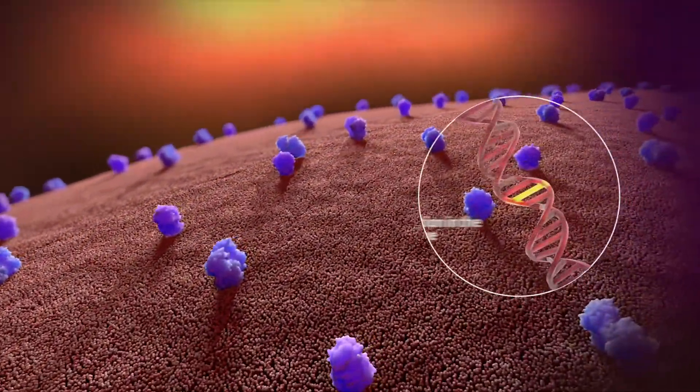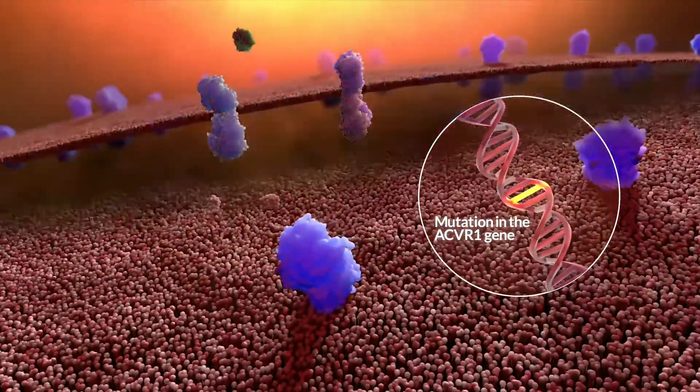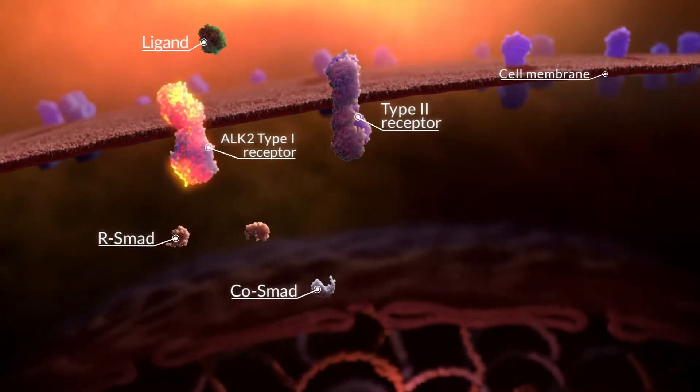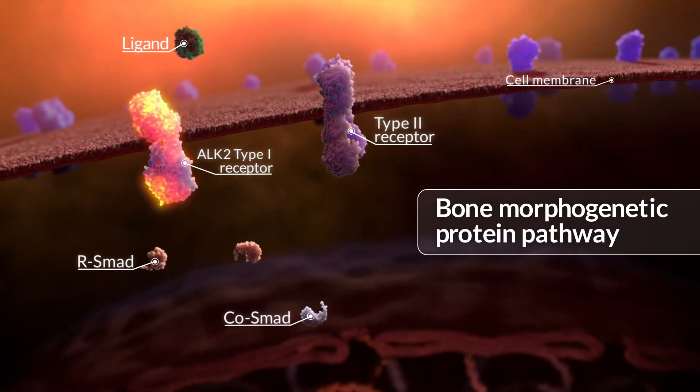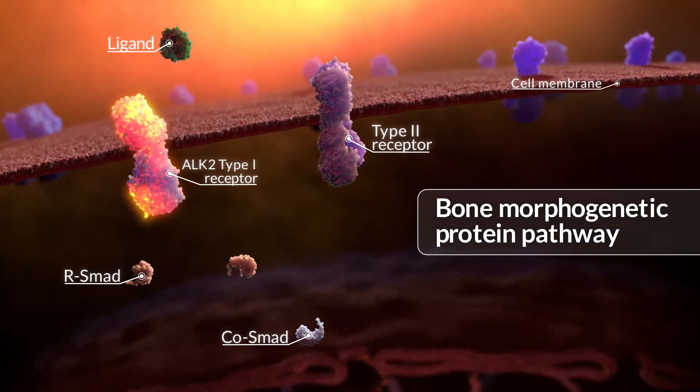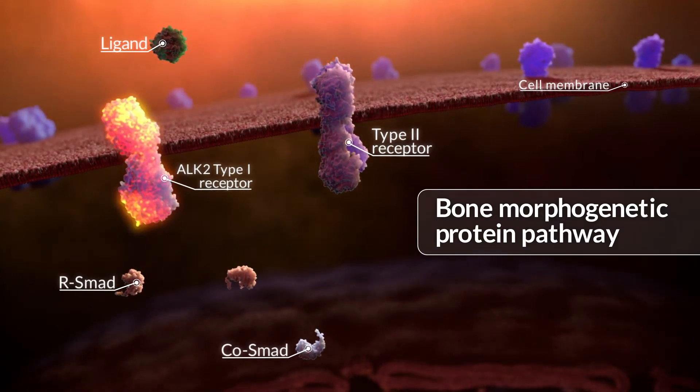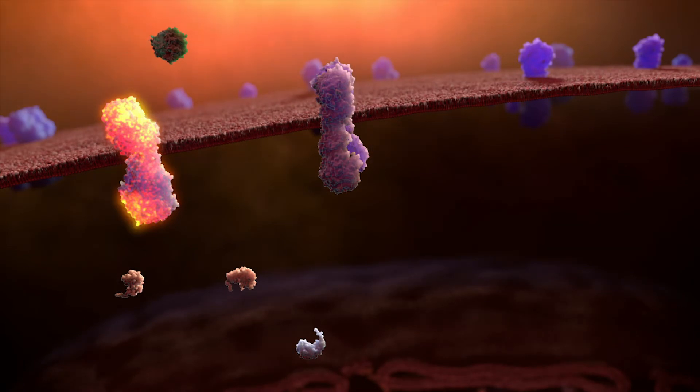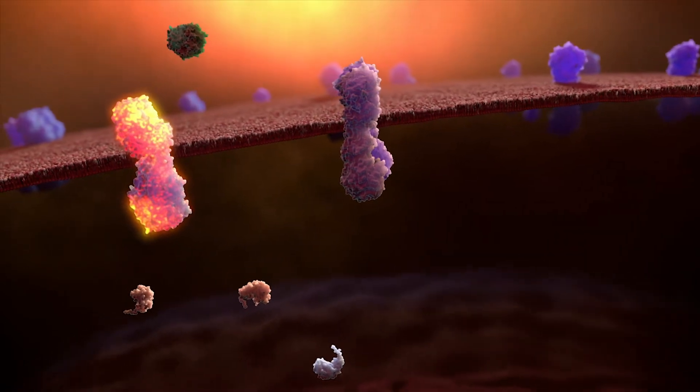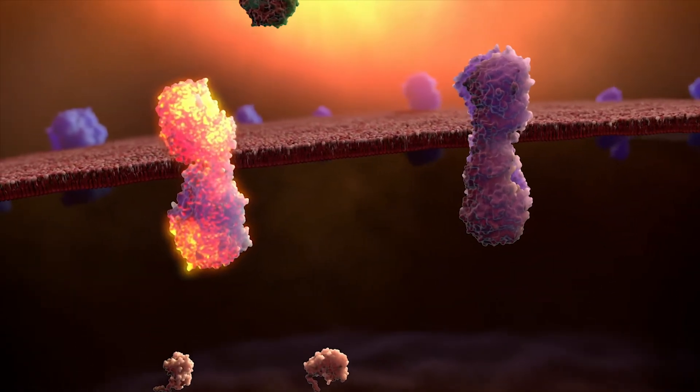Individuals with FOP have a mutation in the ACVR1 gene that encodes for the ALK2 receptor, a BMP type 1 receptor. This receptor is part of the bone morphogenetic protein or BMP pathway and is critical in the regulation of cartilage and bone development and growth.